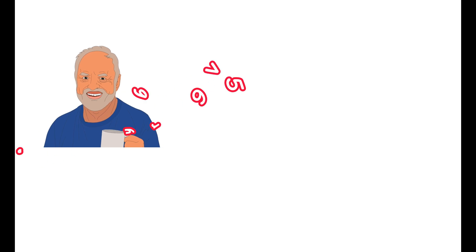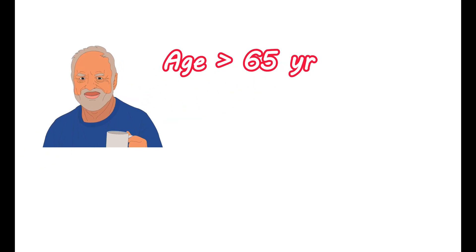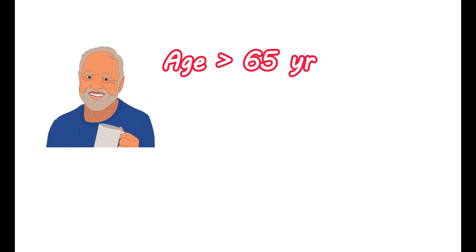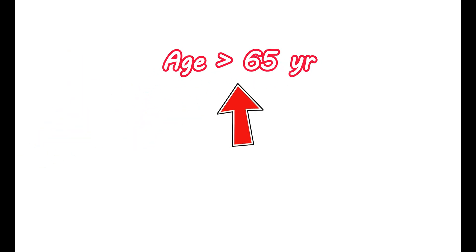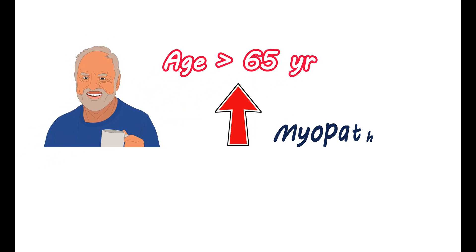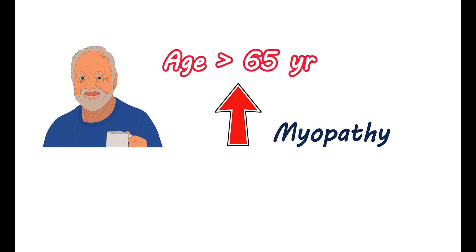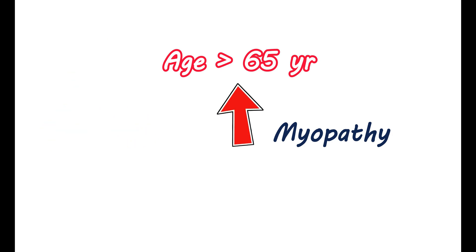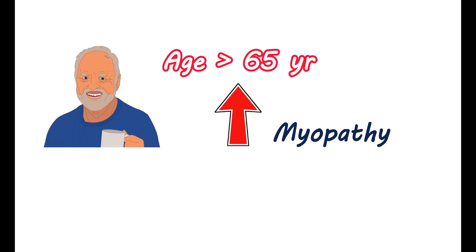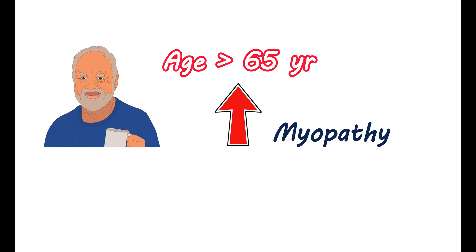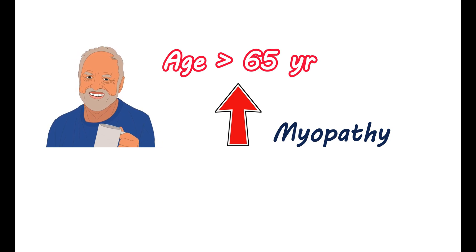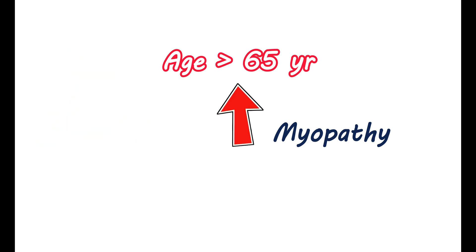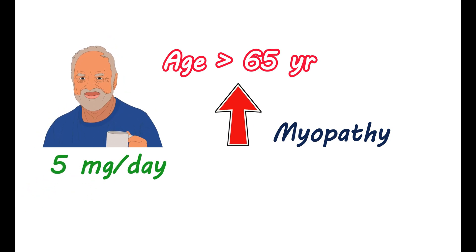If you are aged above 65 years, you should start rosuvastatin at a low dose. A high risk of myopathy is associated with the use of this medication at higher doses initially. Therefore, you should start it at a low dose — typically 5 mg per day.